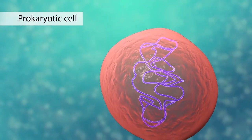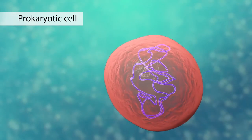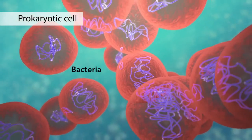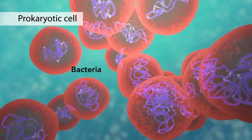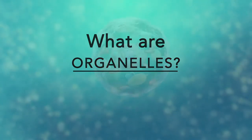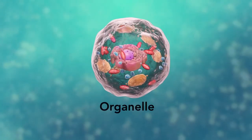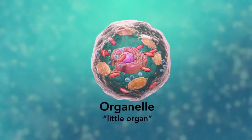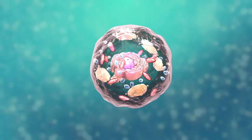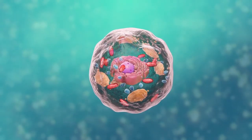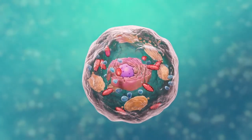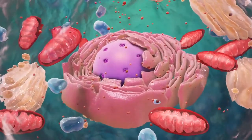The second category is prokaryotic cells. They don't have a nucleus or membrane-enclosed organelles. They do have genetic material, but it's not contained within a nucleus. Prokaryotic cells are always one-celled or unicellular organisms, such as bacteria. So what are organelles? Organelle means 'little organ' — organelles are the specialized parts of a cell that have unique jobs to perform.